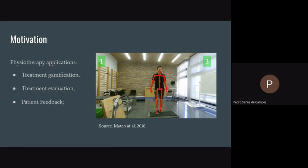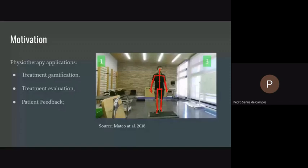We can also try to evaluate the treatment. If we do many sessions with the same patient, we can collect data from the first, second, and third sessions and find how the treatment is evolving. We can also give real-time feedback to the patient. For example, if the patient is doing a movement incorrectly, and I know the position of their body while doing this movement, I can tell them how their movement is wrong and how to correct it.